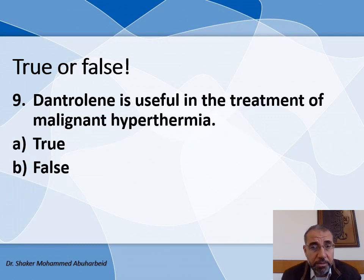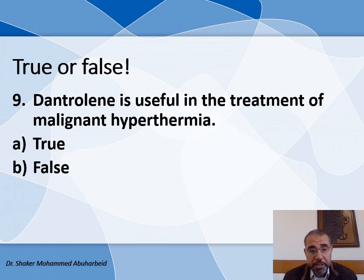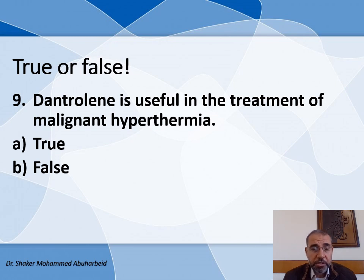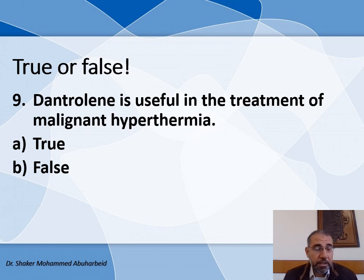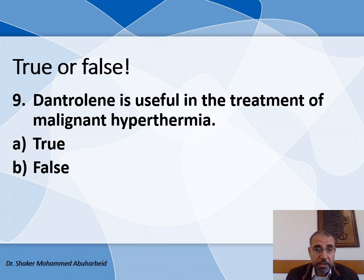Question number nine true/false: Dantrolene is useful for treatment of malignant hyperthermia. This life-threatening condition can be seen in patients treated with succinylcholine or general anesthetics, and patients will suffer from muscle rigidity. Dantrolene is very useful in this case, so the answer is true.